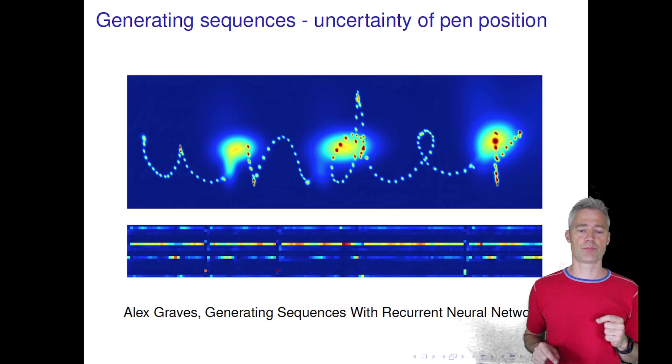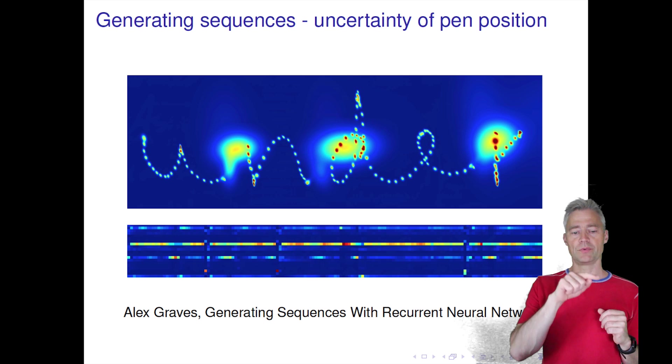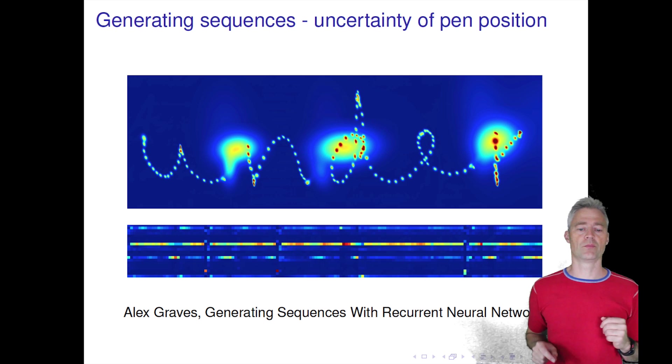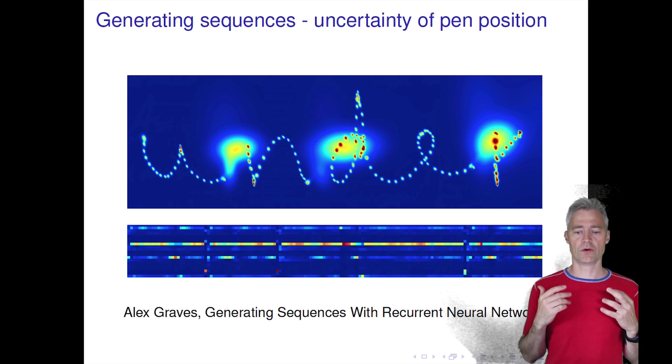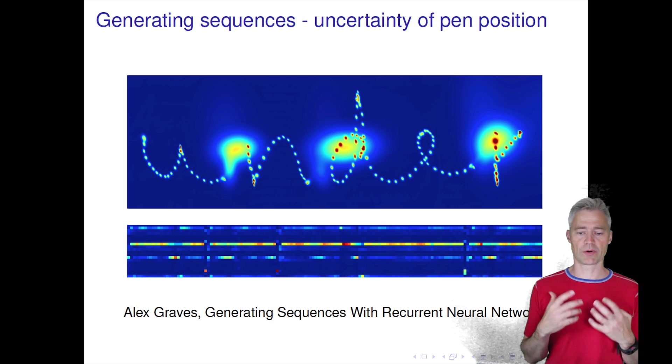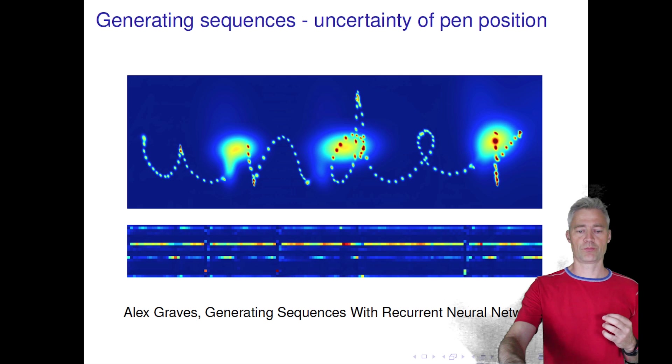This is indicated by this yellow color, which is the probability density of where we put the pen in the next step. But once we start writing the N, the model becomes quite certain again. This is really showing the power of probabilistic modeling also when we are talking about a regression type of problem.